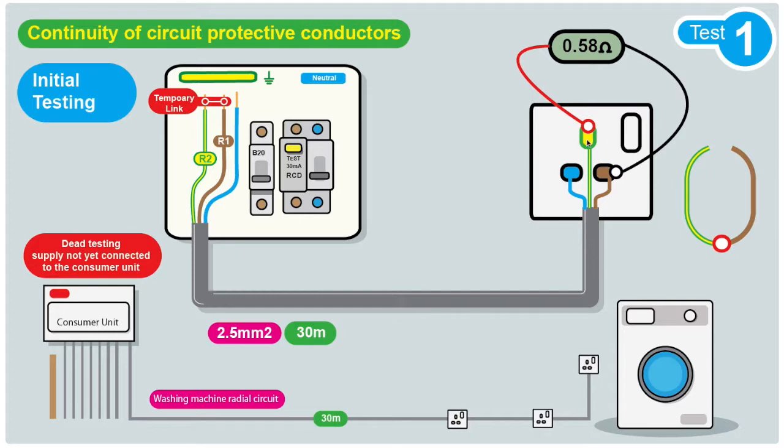The CPC at the furthest point. Now we put a temporary link between the CPC and the line cable, then we go to each point and test between the CPC and the line cable conductor with a test meter.